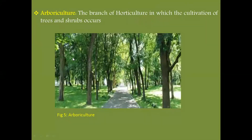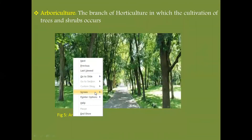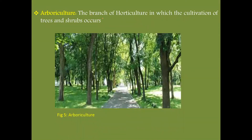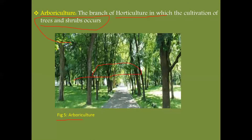Next is arboriculture. It is the branch of horticulture in which the cultivation of trees and shrubs occurs. In figure four, different types of trees and shrubs are given, representing what is cultivated in arboriculture.